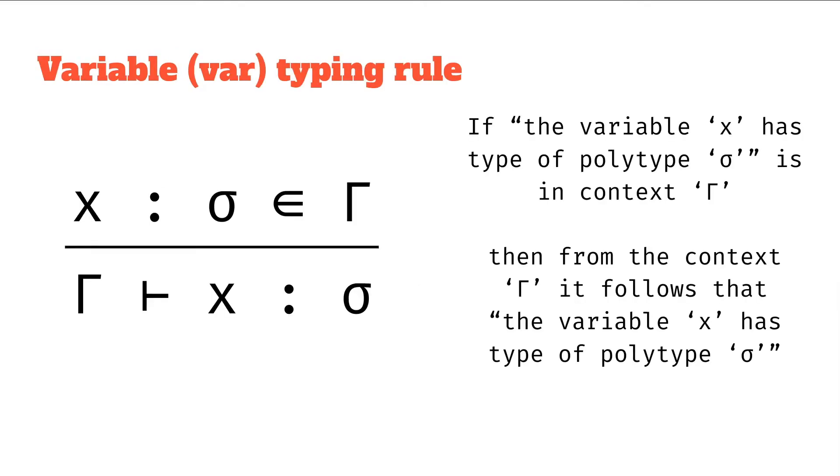So let's go back and look at the rule, maybe we can think about a bit of intuition that we can get to understand the rule a bit better. So again, when we read it out, we read it as if the variable x has type of polytype sigma is in the context gamma, then from the context gamma, it follows that the variable x has type of polytype sigma.